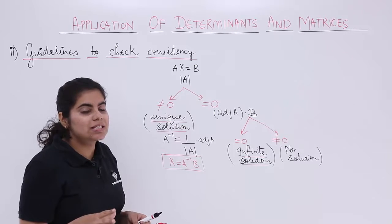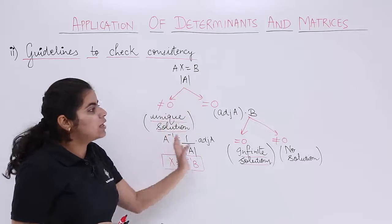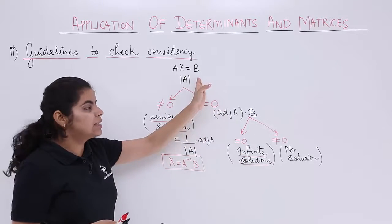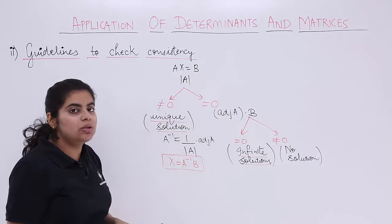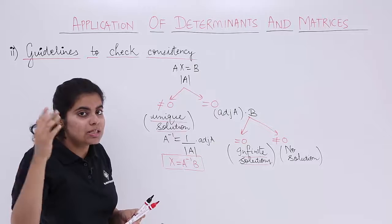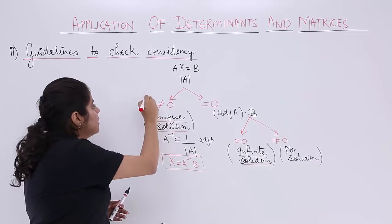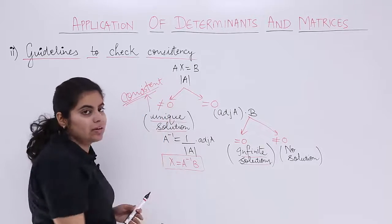If somebody asks you to check whether given system of equations is consistent or not, same thing to follow. You need to check determinant value. If that determinant value is not equal to 0, you need to think that not equal to 0 means I have a unique solution. And unique solution means one solution. So it is a consistent system.